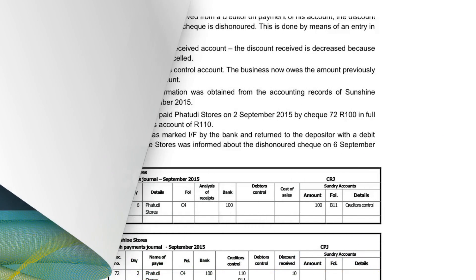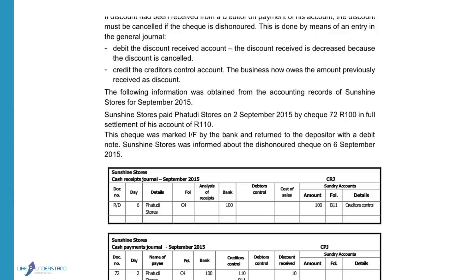Good morning. We will pay attention to cancellation of discount received today. When we pay a creditor and we receive a discount, we record the discount received in the discount received account and indicate that we owe less money to the creditor. If a check paid to a creditor is cancelled due to insufficient funds, the discount on that check must also be cancelled. This is done by way of a general journal entry.